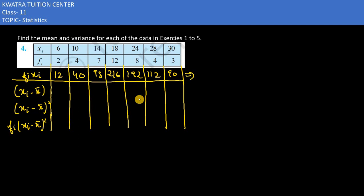So we will add up summation fi xi and summation fi, because we get the mean. Adding up fi xi will get the value of 760. Adding up fi will get the value of 40.